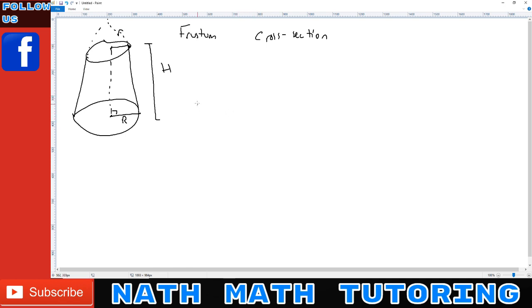If I take a cross section, each cross section pretty much looks like this. They are mini cylinders of radius x which is unknown.